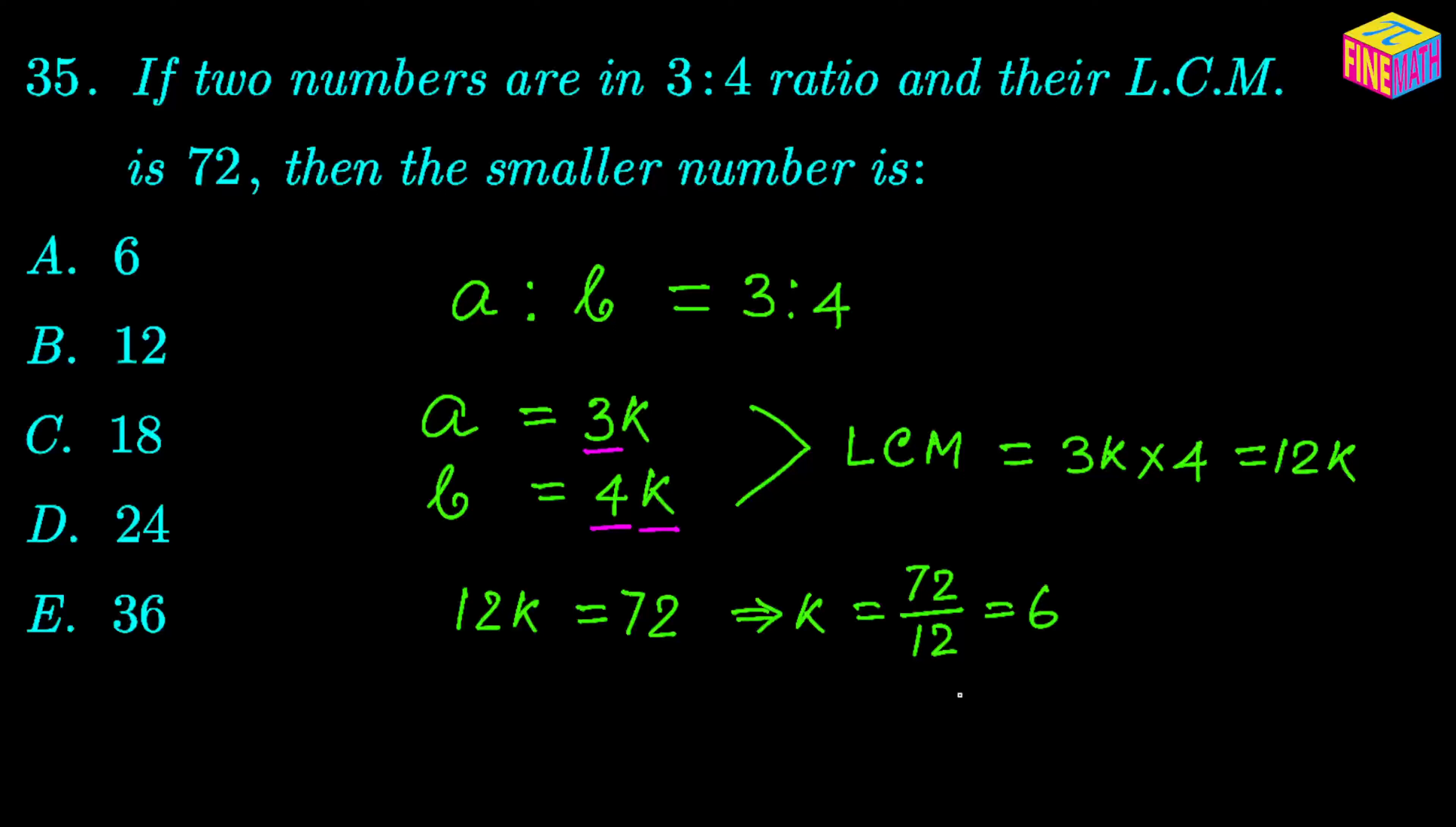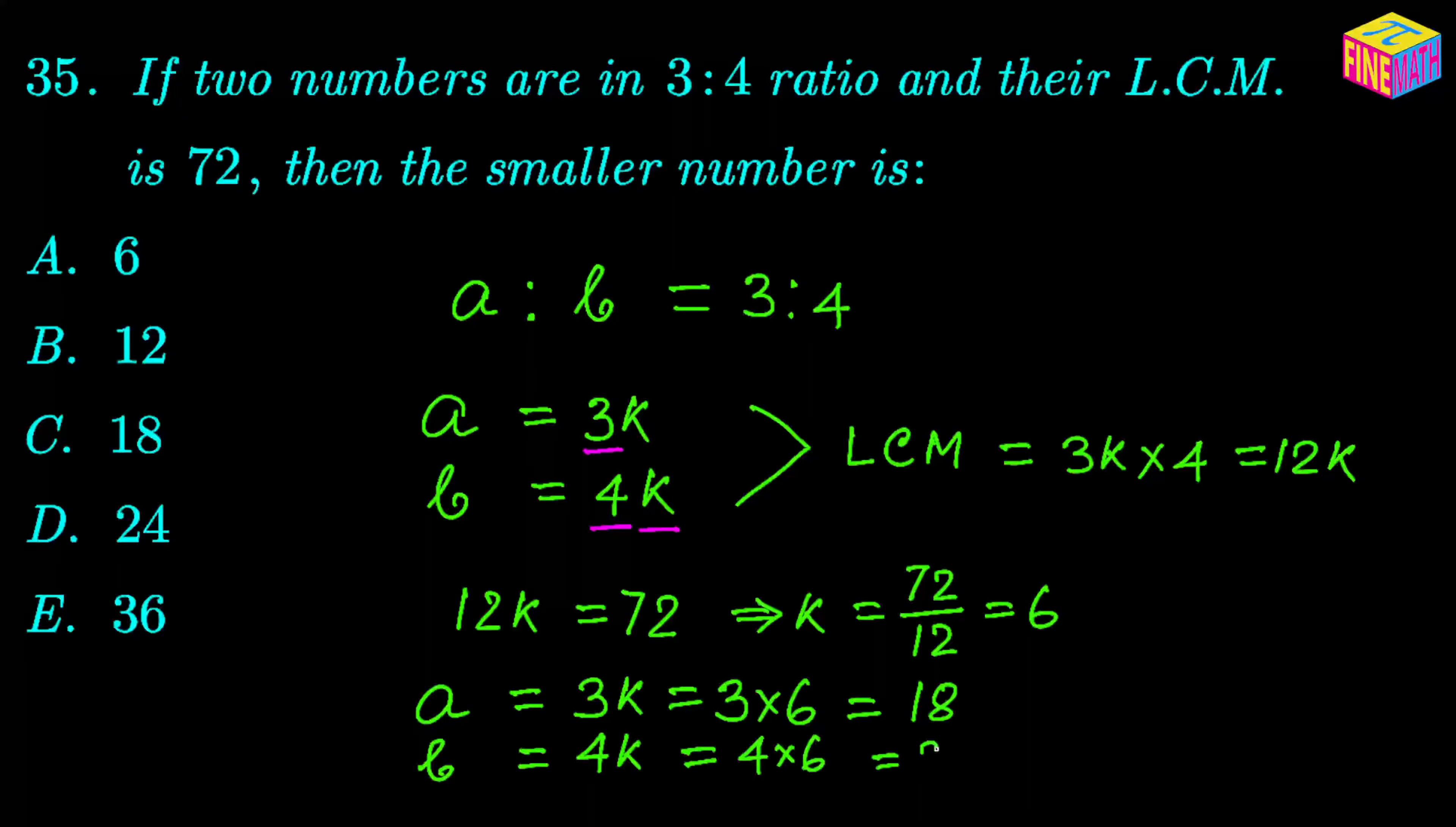So now we know the value of K which is 6. So what is A then? Well, A would be equal to 3 times K, which is 3 times 6, that is equal to 18. And B would be 4 times K, which is 4 times 6, that would be 24.